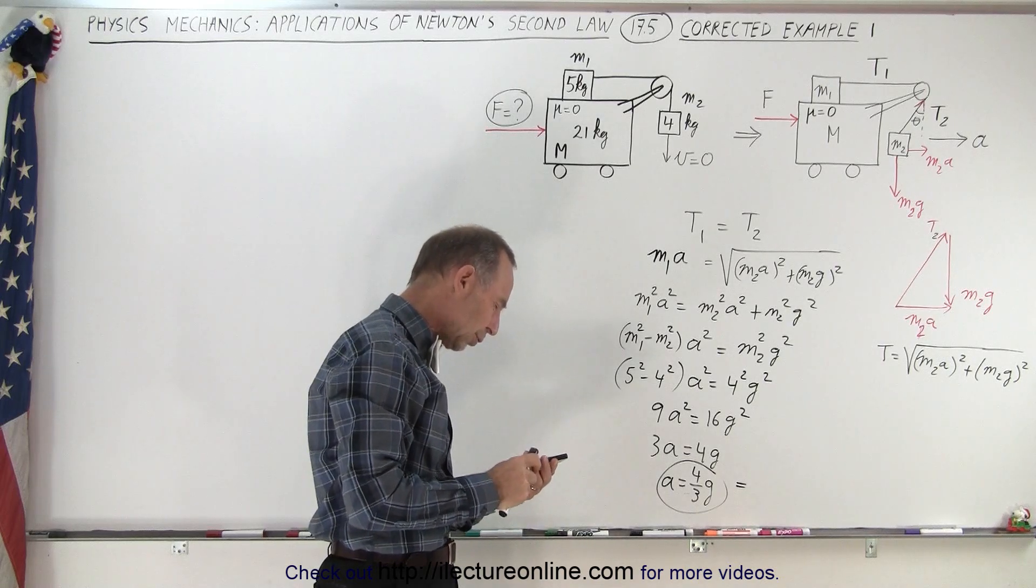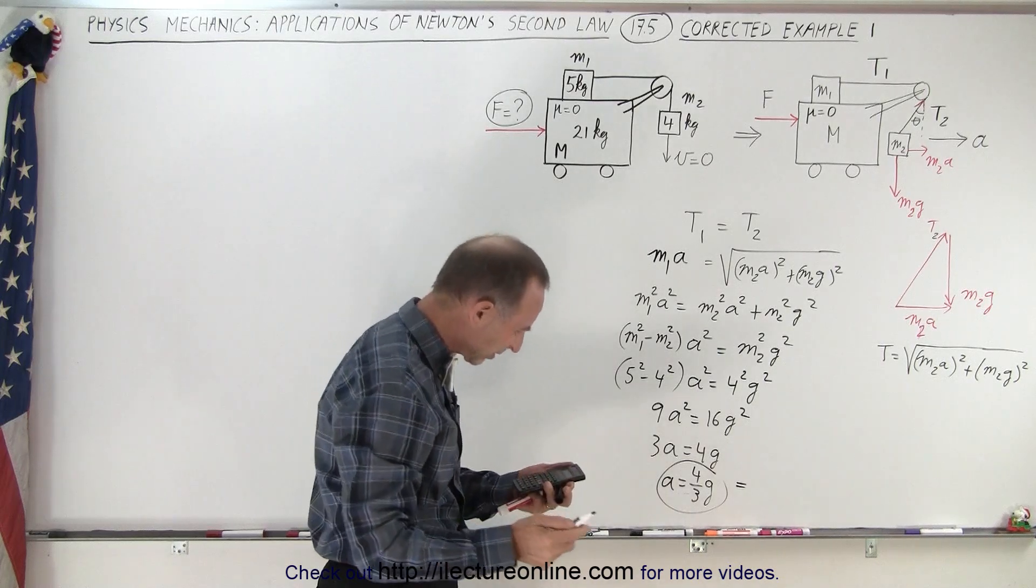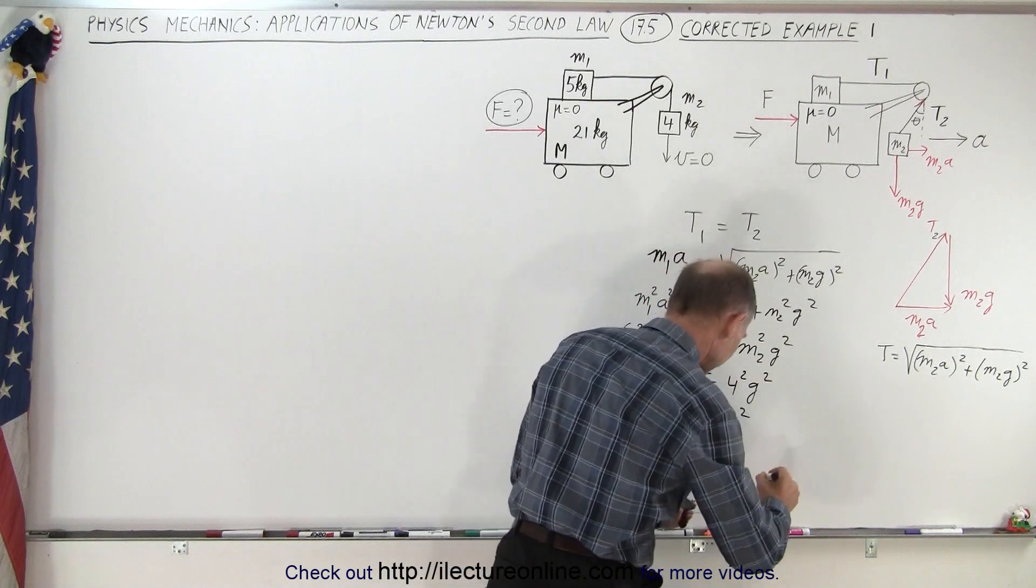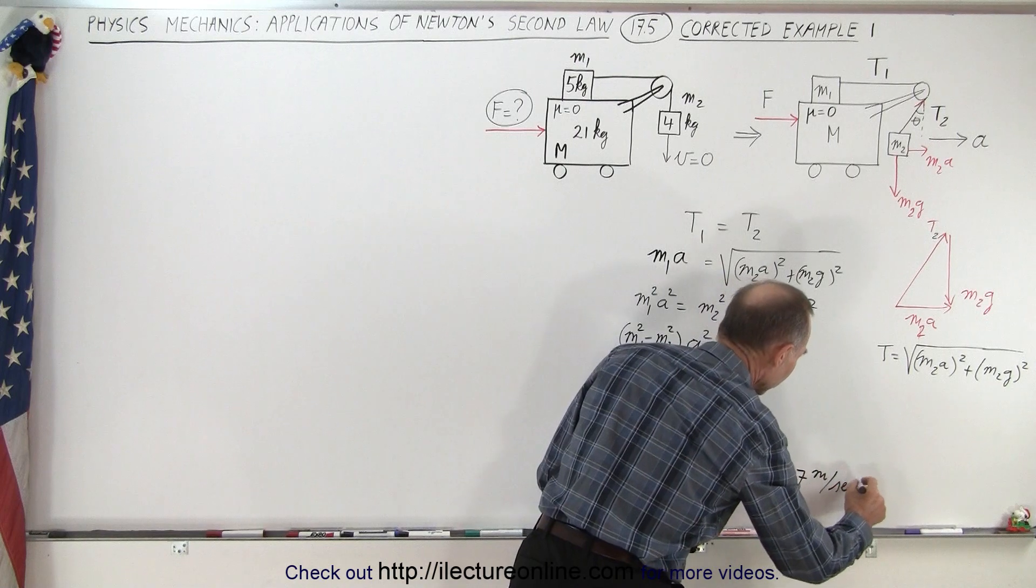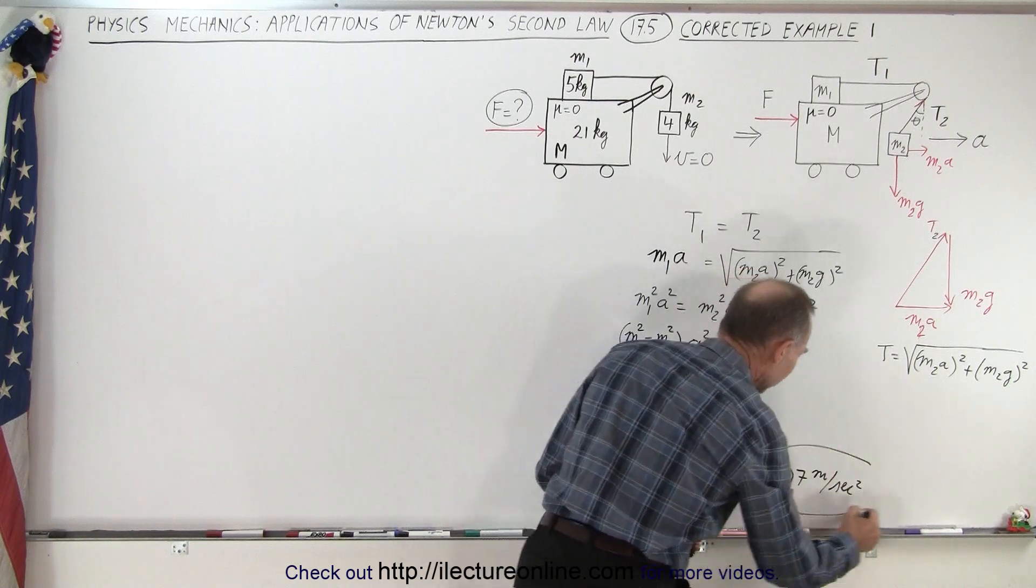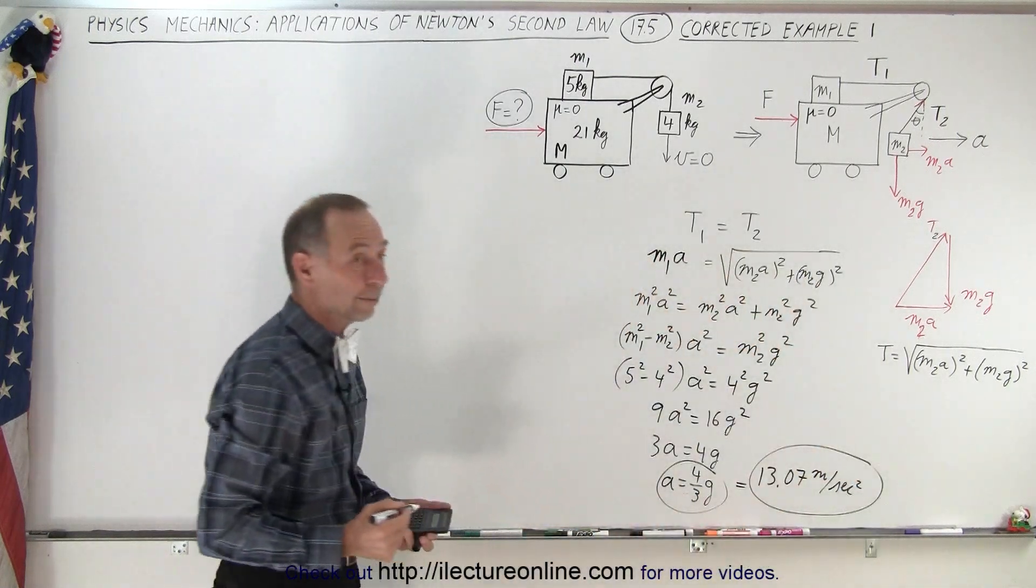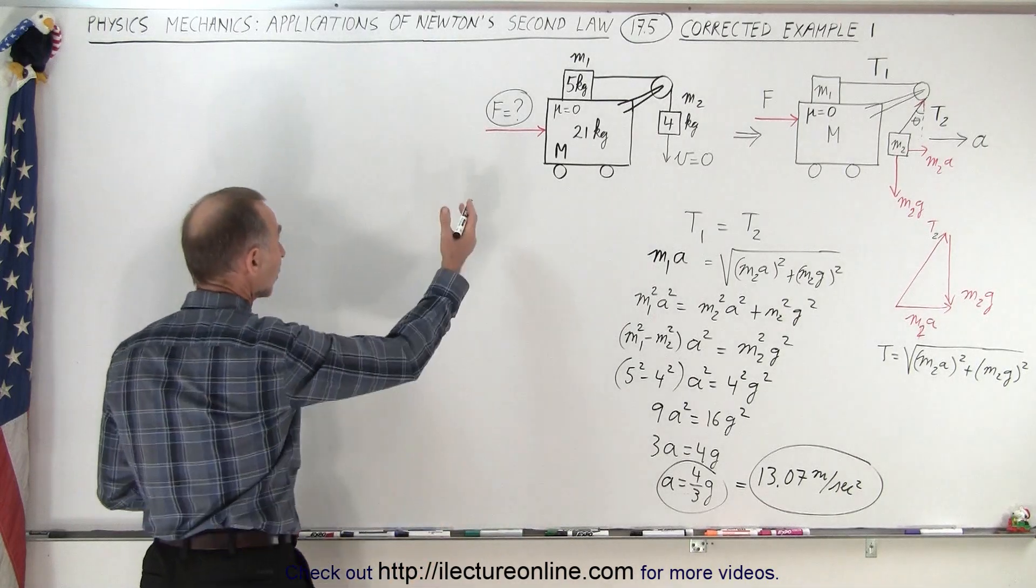We have 9.8 times 4 divided by 3, and we get 13.067, so 13.07 essentially, 13.07 meters per second squared, of course, since g is equal to 9.8 meters per second squared.